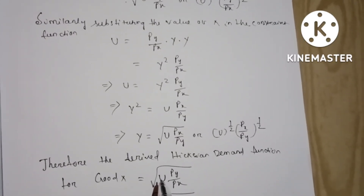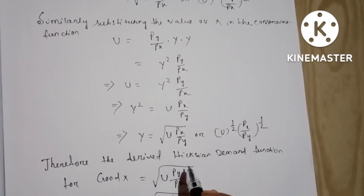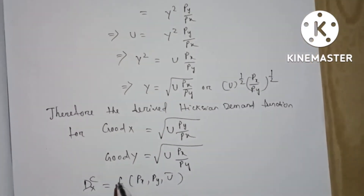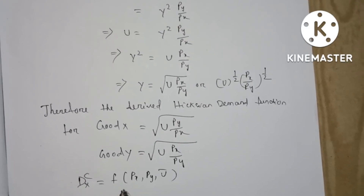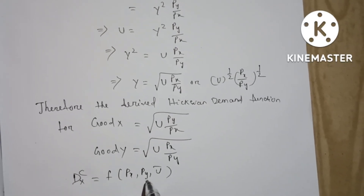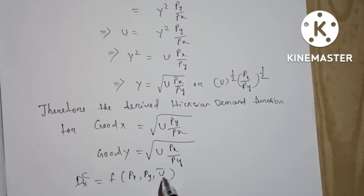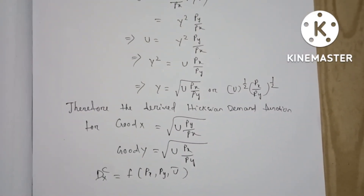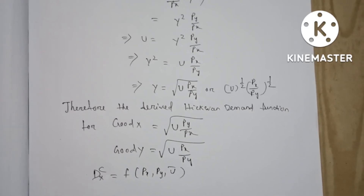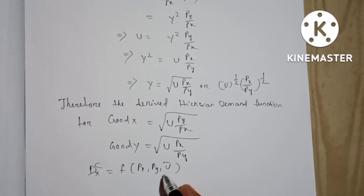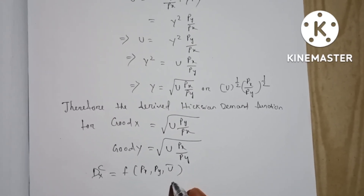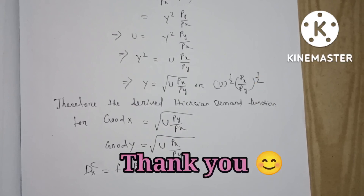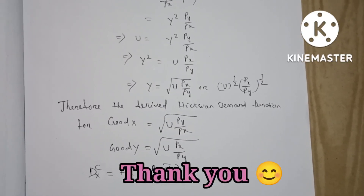The derived Hicksian or compensated demand function for good X equals the square root of U·(PY/PX), and for good Y equals the square root of U·(PX/PY). The compensated demand function is a function of prices of good X, prices of good Y, and U-bar (fixed utility). With this function, one can measure the impact of price changes for a fixed level of utility.